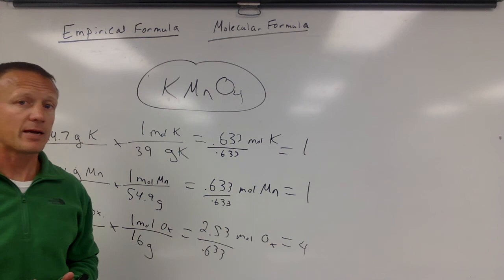So turn your percents into grams, pretend like it's a 100 gram sample. Take those grams, turn them each into moles, divide them all by the smallest number of moles to get the ratio.